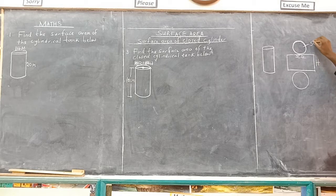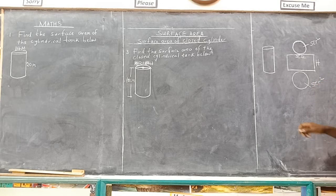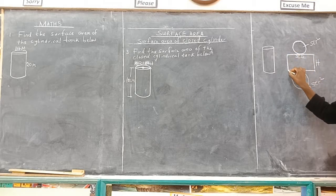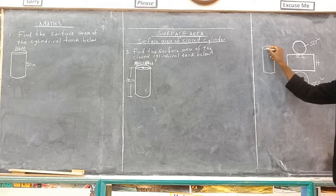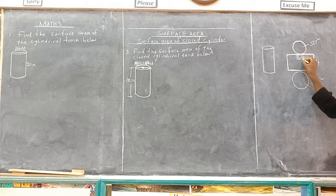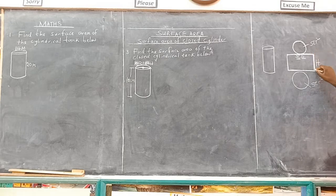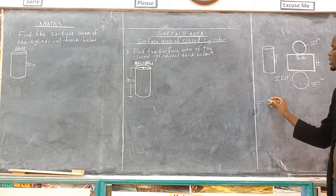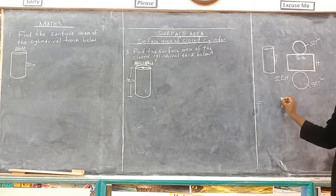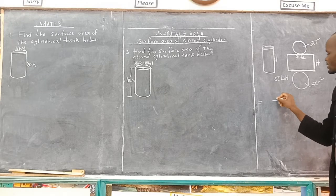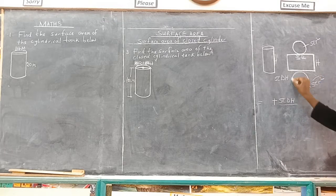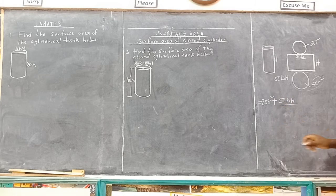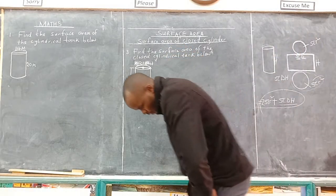This one is a circle. The area of a circle is pi r squared. Then we have another circle, which is also pi r squared. Then we add the rectangle representing the curved surface. The curved distance is the circumference, which is pi times diameter, and then we multiply by the height of the container. So the formula used to get the surface area of a closed cylinder is: pi diameter times height plus 2 pi r squared.